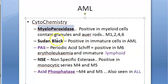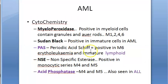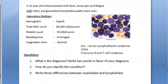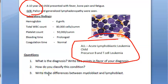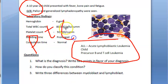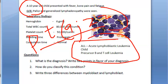For AML, myeloperoxidase, Sudan black, and non-specific esterase are used. For ALL, PAS and acid phosphatase are used; the other three stains are negative. Notably, the Philadelphia chromosome (t9;22 translocation) is not exclusive to CML — it is also present in some cases of ALL.